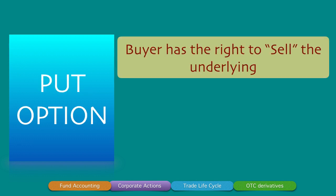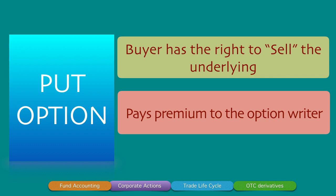A put option gives the buyer the right to sell the underlying asset. If you own an asset and want to sell it but are unsure about the price, you might consider buying a right to sell. Because the put option buyer has all the rights, they must pay a premium to the option seller. Note: I use both 'right' (R-I-G-H-T) and 'write' (W-R-I-T-E), since options are contracts and someone who writes a contract is the seller.